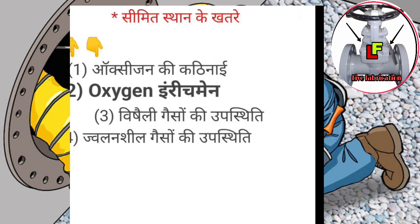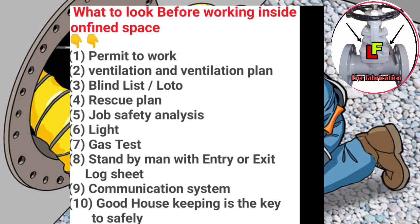Seemit sthan ke khatre: 1. Oxygen ki kathinai, 2. Oxygen enrichment, 3. Vishayali gason ki upasthiti, 4. Jvalanshi gason ki upasthiti.